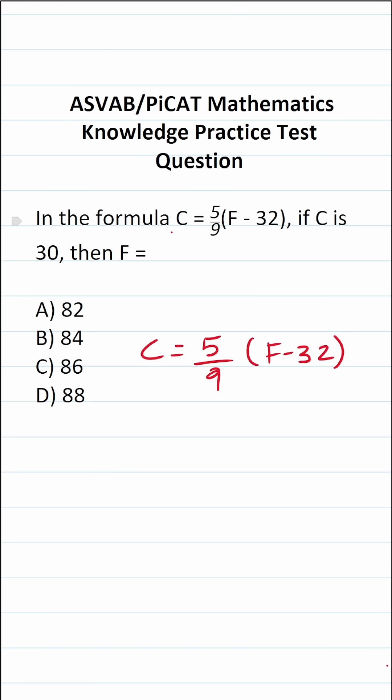Now to get started, I'm simply going to copy down this formula. And what's more, we know that according to the problem, C is going to be 30. So the next thing I'm going to do is plug in 30 for C. This becomes 30 equals 5 ninths times F minus 32.